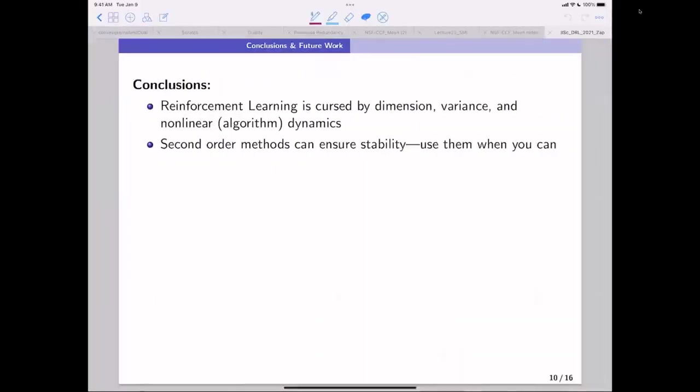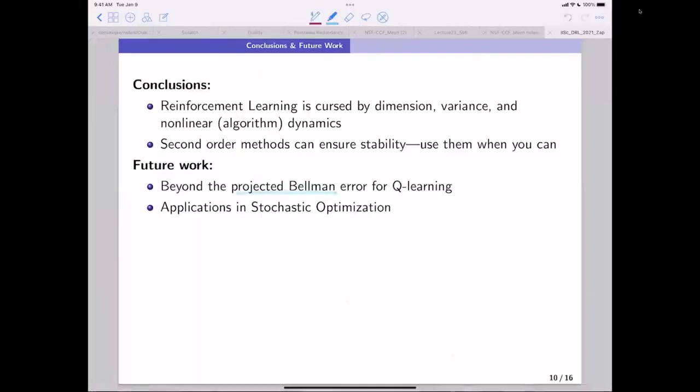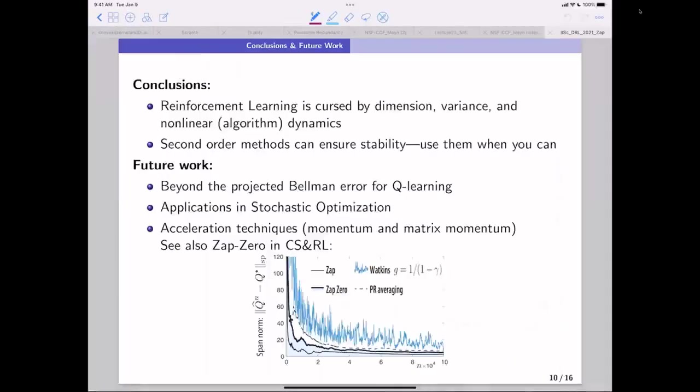Second order methods are magic if you can use them. So if you have an example that's dimension not too high, why not? And in terms of Q-learning, this projected Bellman error, I hope so much we can find some alternative approaches where we have a better intuition of what we're doing. And I think the applications of what I've talked about to stochastic optimization are going to be really cool. Now, there's acceleration techniques that don't involve matrix inverses. They're also in Aditya's thesis, one is matrix momentum. Very new, I jokingly call it ZapZero, which is in my new book.